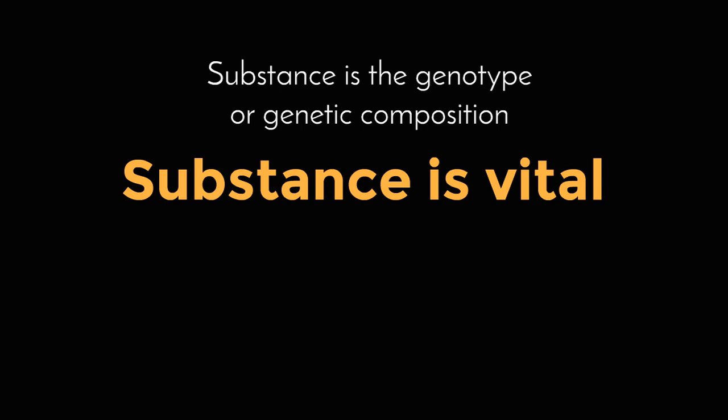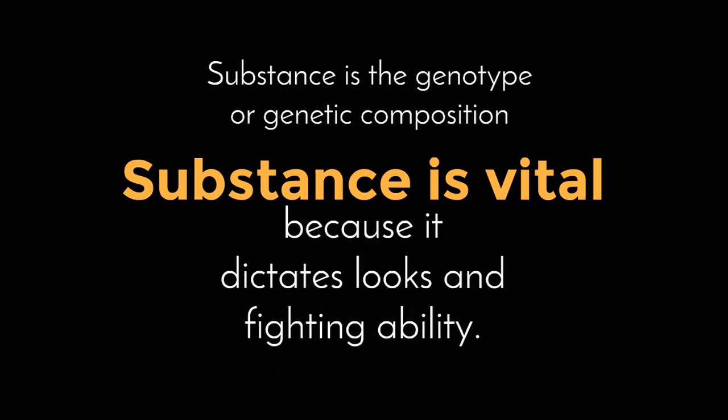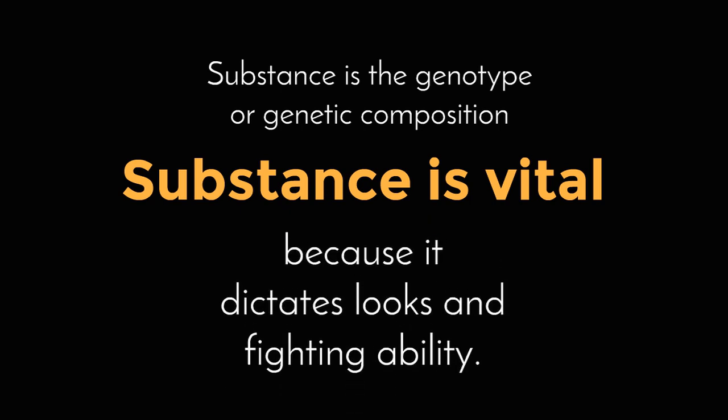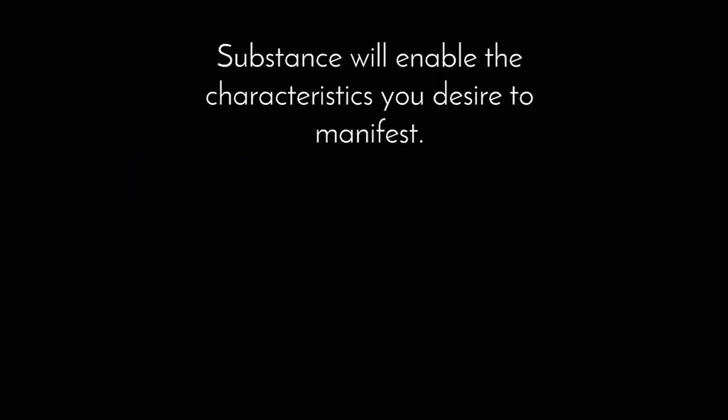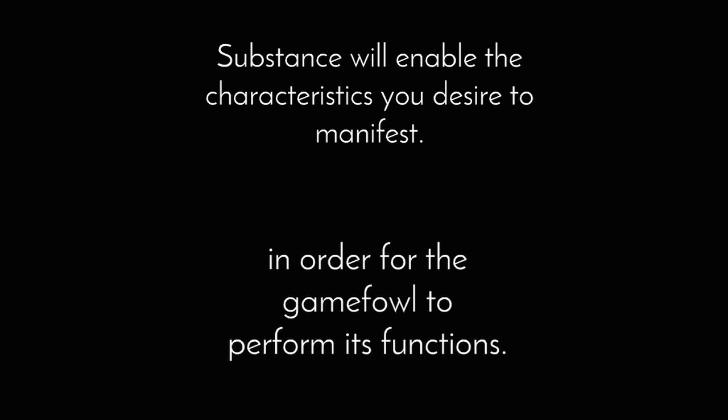Our topic today is Achieving Good Substance. Substance of gamefowl is its genotype, or its genetic composition. It is important because substance dictates the form and function of the gamefowl. An ideal genotype is either pure or heavy with the traits you desire to constitute your bloodline's type. The ideal substance will enable the characteristics you want in your gamefowl to manifest, in order for it to fulfill its function.